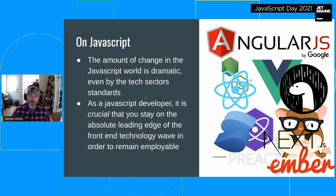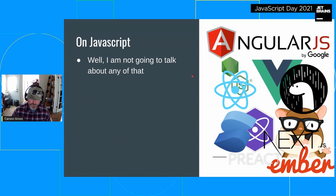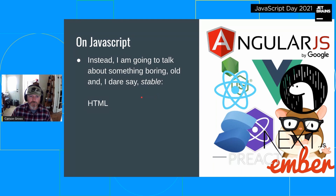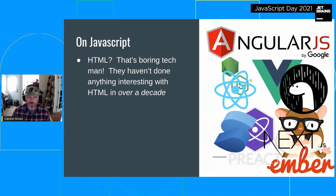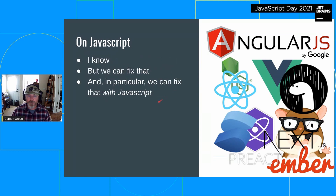As a JavaScript developer, it's crucial that you stay on the leading edge of front-end technology — and back-end increasingly — in order to remain employable. But I'm not going to talk about any of that. I'm not going to help you stay employable, at least not in the short run. Instead, I'm going to talk about something old and boring — something that is, dare I say, stable: HTML. HTML is boring, it's dumb, it's this janky UI description language that we have to use. They haven't done anything interesting with HTML in almost a decade — HTML5 is almost a decade old — so it's just this boring and annoying UI infrastructure we have to use when building our JavaScript applications.